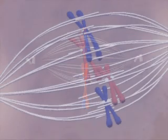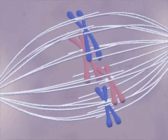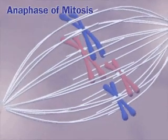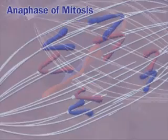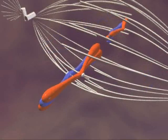Now comes the second key difference between mitosis and meiosis I. In anaphase of mitosis, the chromatids separate. In anaphase I of meiosis, the homologous chromosomes separate.